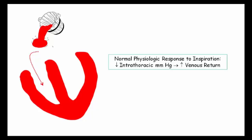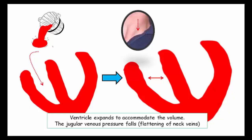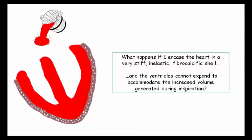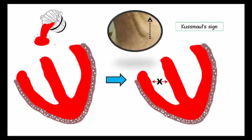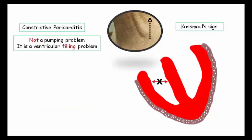What is the normal physiologic response to inspiration? There is a decrease in intrathoracic pressure, which results in an increase in venous return. Blood returns to the right chamber, the ventricle expands, and the jugular venous pressure falls. But what happens if the heart is encased in a very stiff, inelastic, fibrocalcific shell and the ventricles cannot expand to accommodate the increased volume generated during inspiration? The increased volume of blood cannot enter the ventricles — so what we see is distension of the neck veins during inspiration. The jugular venous pulse paradoxically rises due to the inability of the ventricles to expand.